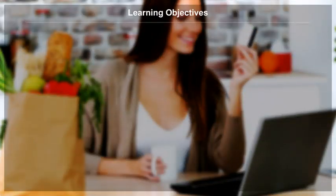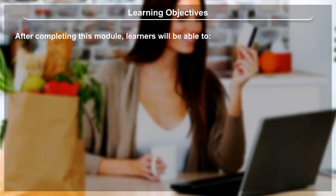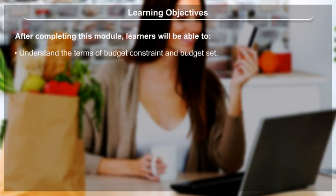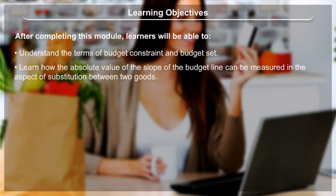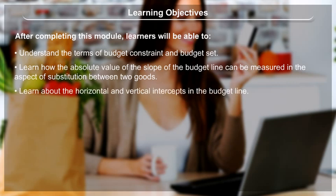Learning Objectives. After completing this module, learners will be able to understand the terms of budget constraint and budget set, and learn how the absolute value of the slope of the budget line can be measured in the aspect of substitution between two goods.